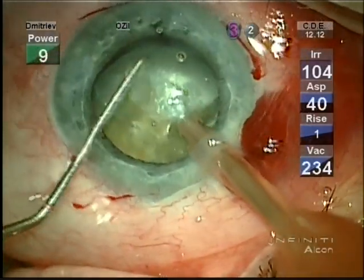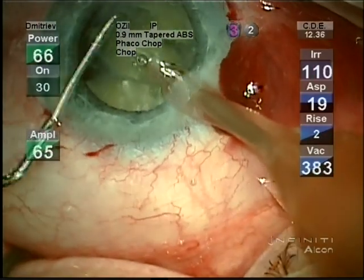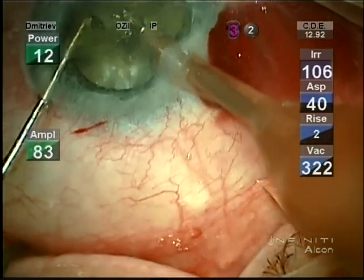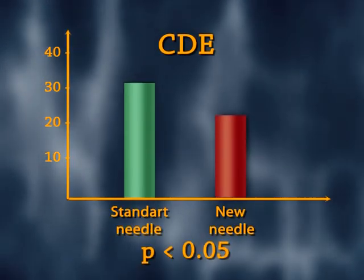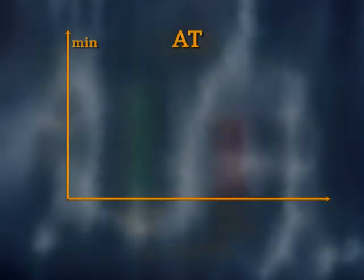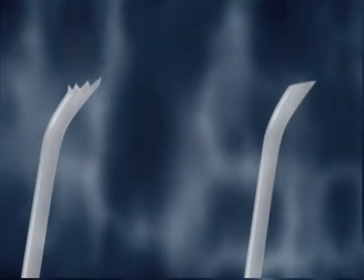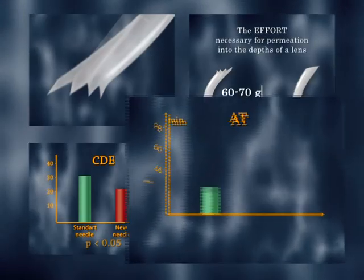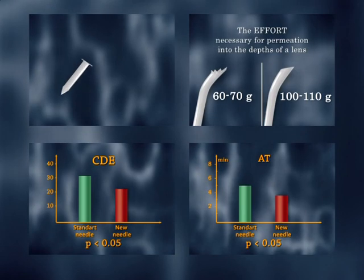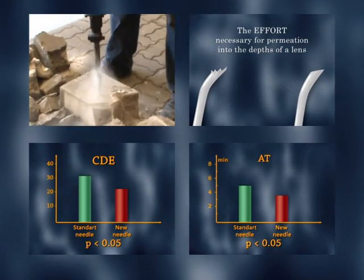Clinical approbation of the new needle was performed on 20 patients with a super-dense nucleus of the lens. In all cases, surgeries proceeded without complications; no lens dislocations, postoperative edemas, or burns of the cornea were observed. More effective results of surgical procedures were achieved due to decreased SDE and aspiration time characteristics. The new needle for phacoemulsification allows effort reduction for destruction and extraction of the super-dense nucleus, reducing SDE and aspiration time, and resulting in a decreased number of postoperative corneal edemas.